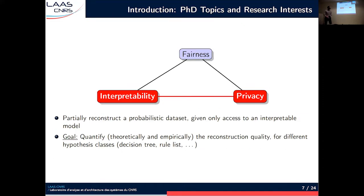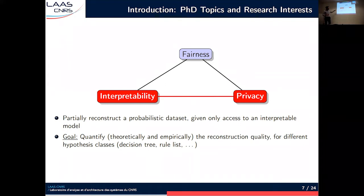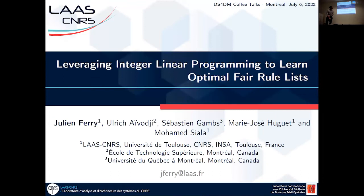Finally, the last edge of the graph: we try to study the conflict between interpretability and privacy. There is a tension because the objective of interpretability is to provide information to make things more understandable, while the objective of privacy is to protect some information. Our objective is to leverage the information contained in the structure of an interpretable model to reconstruct a probabilistic version of the training set, theoretically quantifying the amount of information that an interpretable model encodes about its training set. We can do so for different types of interpretable models, and this is current work. This ends the first part of my talk.